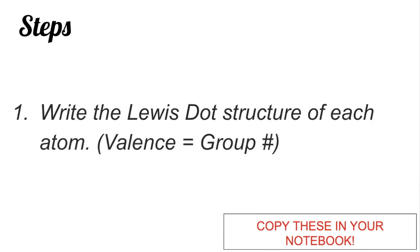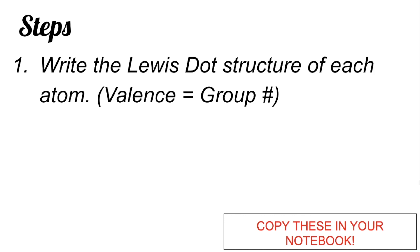What are the steps in showing covalent bonds? The first step is to write the Lewis dot structure of each atom. In writing the Lewis dot structure, you only check the number of valence electrons, which corresponds to the group number of your elements. This only applies to your group A elements, not including your transition metals.